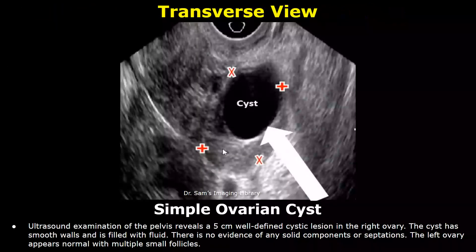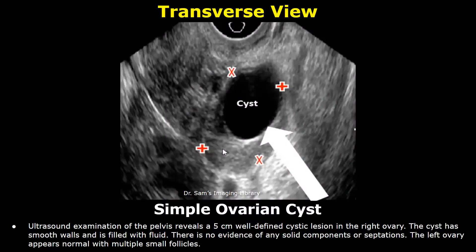The first case is simple ovarian cyst. In the findings, you can start by writing the size of the cyst, then write: well-defined cystic lesion in the right or left ovary. The cyst has smooth walls and is filled with fluid. There is no evidence of any solid components or septations. The left ovary appears normal with multiple small follicles.